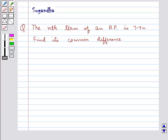Hello and welcome to the session. In this session we discuss the following question which says the nth term of an AP is 7-4n. Find its common difference.